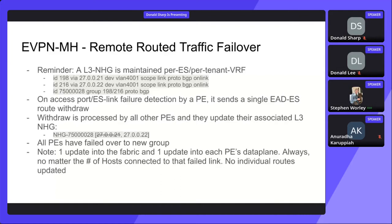The same will be true for routed traffic — very similar concept. L3 next hop groups are maintained per ES per tenant VRF. On port or ES link failure detection by the PE, it'll send a withdrawal, and we process it in the exact same way, but now we're withdrawing the VTEP IP from the L3 next hop group. All of it happens independently on every remote PE. That's one update into the fabric and one update into the data plane, no matter how many hosts are connected, no matter how many individual routes. If we have a thousand routes that have to be updated, only one actual data plane update is sent.